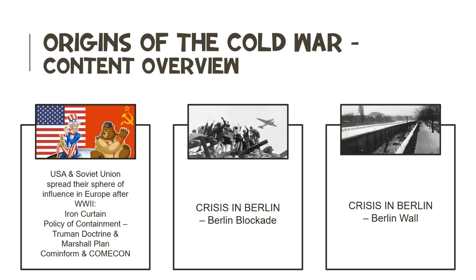This includes things like the Iron Curtain, America's policy of containment which consisted of the Truman Doctrine and the Marshall Plan, and the Soviet Communist Information Bureau or Cominform and the Council for Mutual Economic Assistance or Comecon. You must also study the Berlin Crisis, the period between 1948 and 1961 in Berlin, with specific focus on the Berlin Blockade and the Berlin Wall. Remember, in accordance to the grade 12 CAPS document and the examination guidelines, the examiner can focus on any of these aspects, so it is very important that you study all of this content.